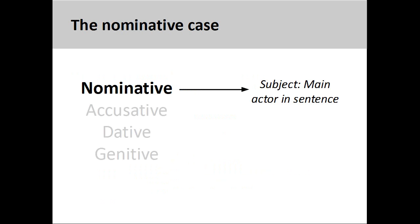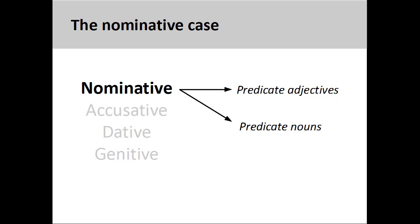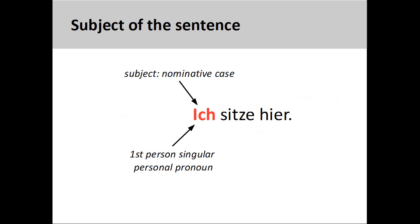The nominative case is used to mark the subject of the sentence, which is the person or thing performing the main action in the sentence. It is also used to mark the predicate adjective or predicate noun in a sentence. The subject of a sentence is always in the nominative case. Using the analogy of the German sentence as a stage, the subject is the main actor on this stage, the person or thing performing an action.